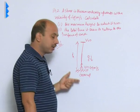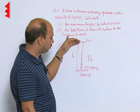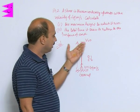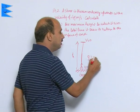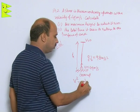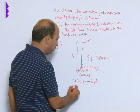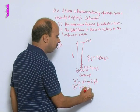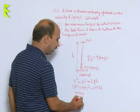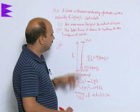After reaching maximum height, the stone starts coming down. To calculate height: final velocity v = 0, u = 49 m/s, g = 9.8 m/s². Using v² = u² − 2gh for upward motion: 0 = 49² − 2 × 9.8 × h. Rearranging: h = (49 × 49) / 19.6 = 122.5 m. So the maximum height is 122.5 m.